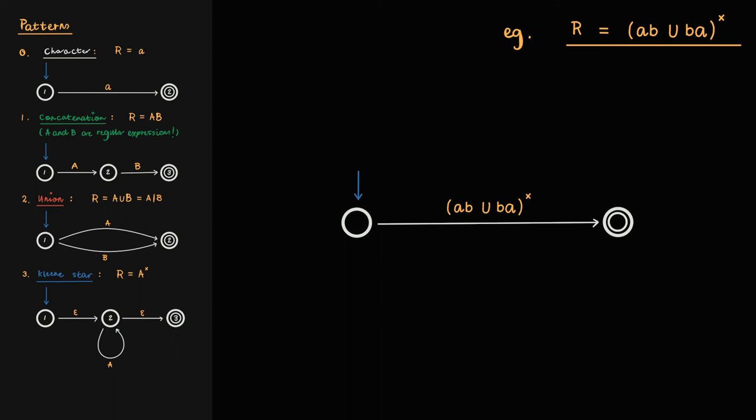R is an expression, ab union ba, followed by a Kleene star. So replace the R transition in the NFA with the Kleene star pattern, representing empty transitions with the epsilon symbol.